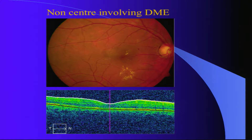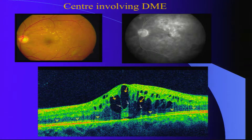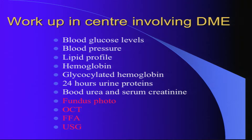Non-center involving DME looks like this — you have a normal foveal contour and the center is not showing any changes. But the challenge is posed by center-involving DME, which as shown here would have so many findings including thickening of the macula right in the center, although clinically you may not see that much.